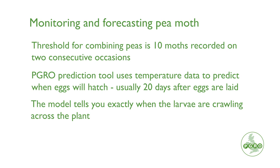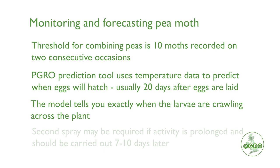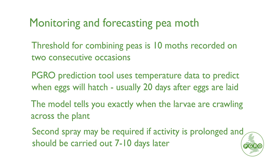A second spray may be required if activity is prolonged and at high levels, and that will be 7 to 10 days later. Go to our website to look for further information about this pest. For pea moth, the threshold in vining peas is slightly different — vining peas has a lower tolerance level. What that means is that you use the traps to indicate the presence of moths. As soon as you start catching them, go onto the website to look for your spray prediction date.